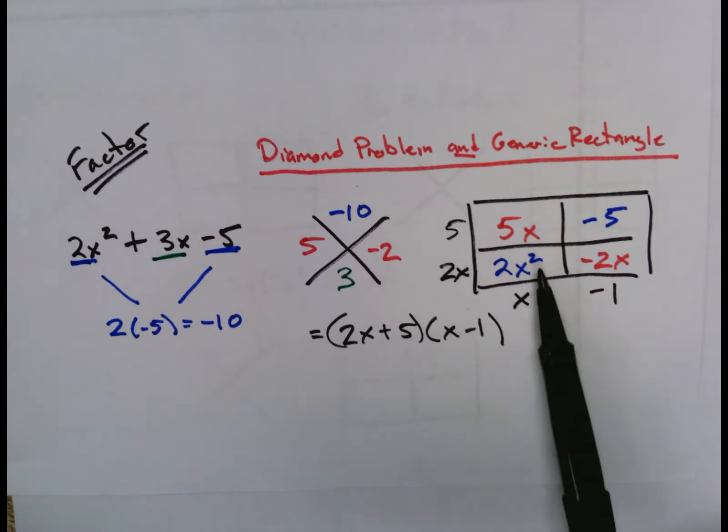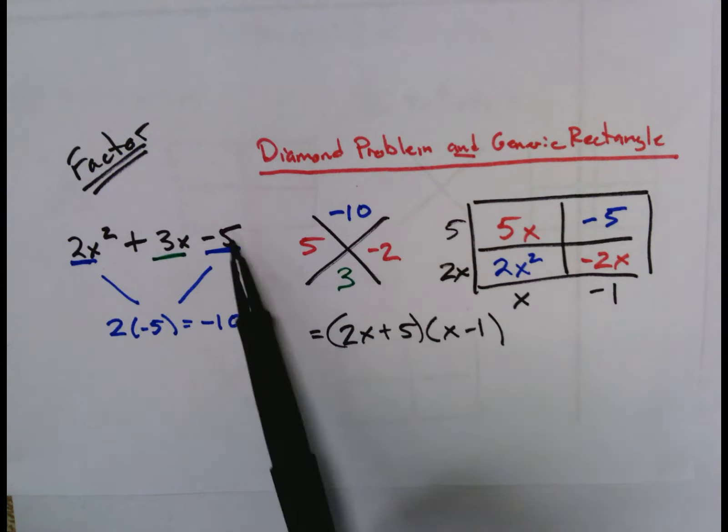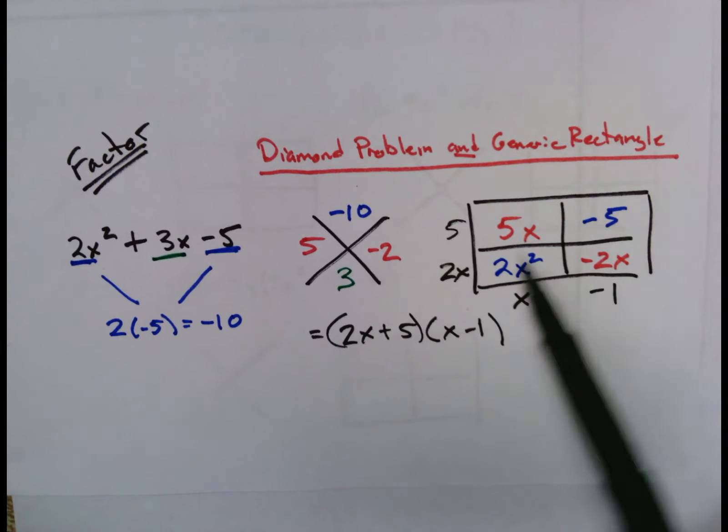Also, that 2x² term goes in the bottom left, and the -5 goes in the top right, right away. So you can start with those.